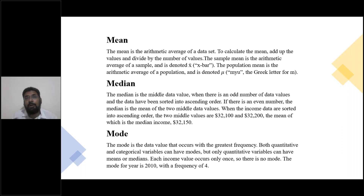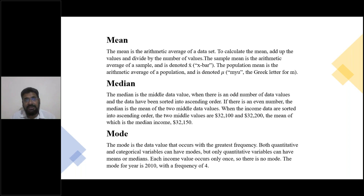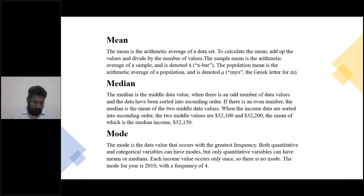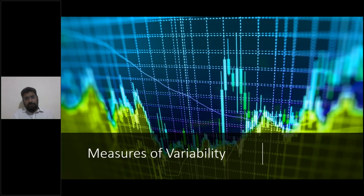Mode is another way of finding central tendency. This works very well for discrete variables — not continuous ones. For discrete variables you can count the most frequently occurring value. If there are 10 people and four of them have a height of 5 feet 4 inches while everybody else has different heights, then 5.4 is the mode of this group. So mean, median, and mode — these are the measures of central tendency. Then there are also measures of variability.